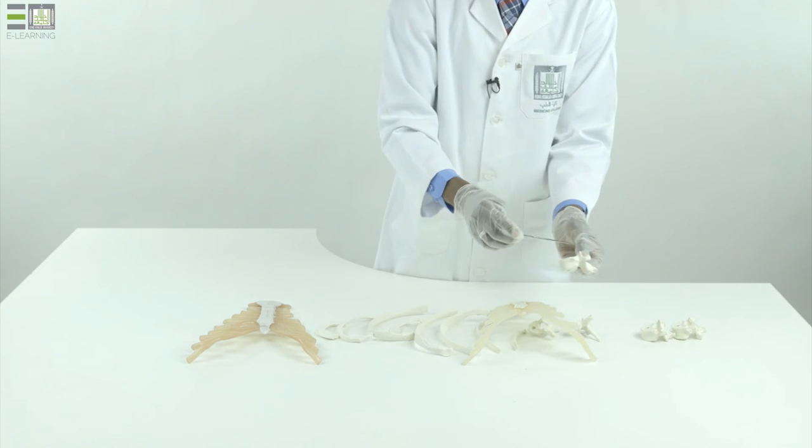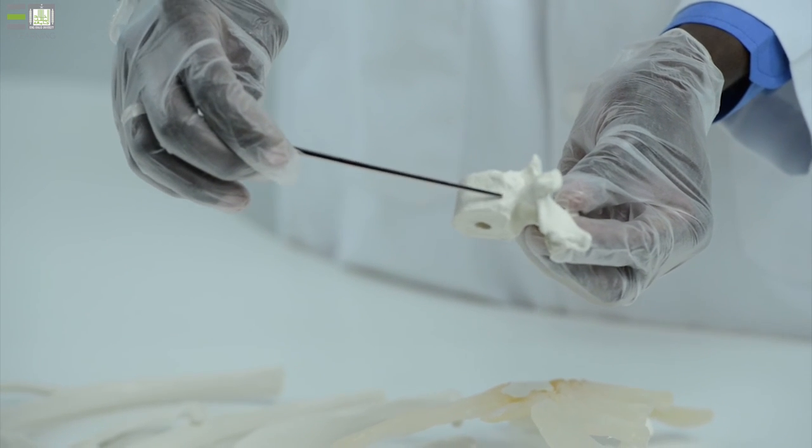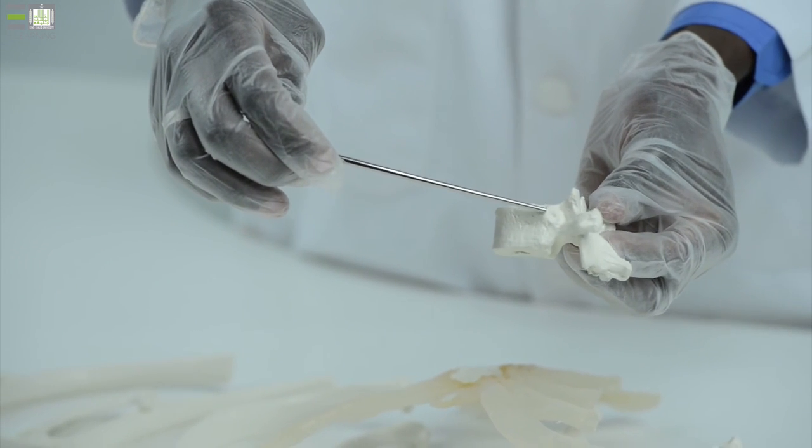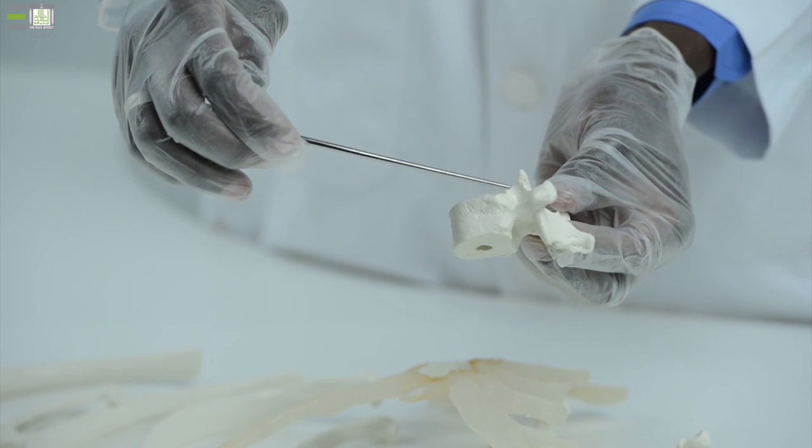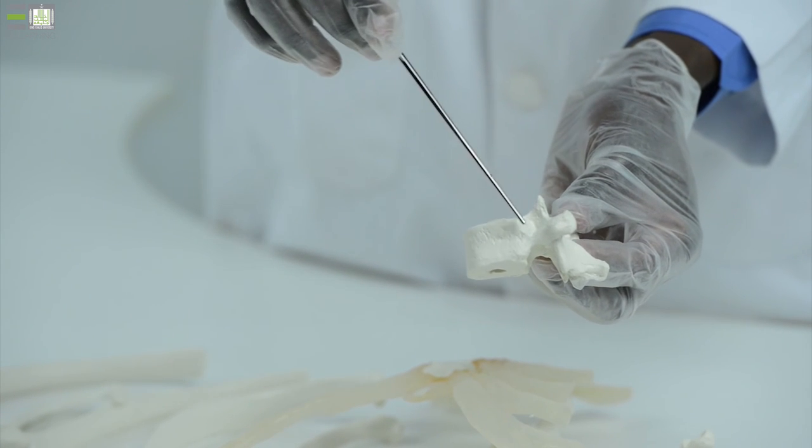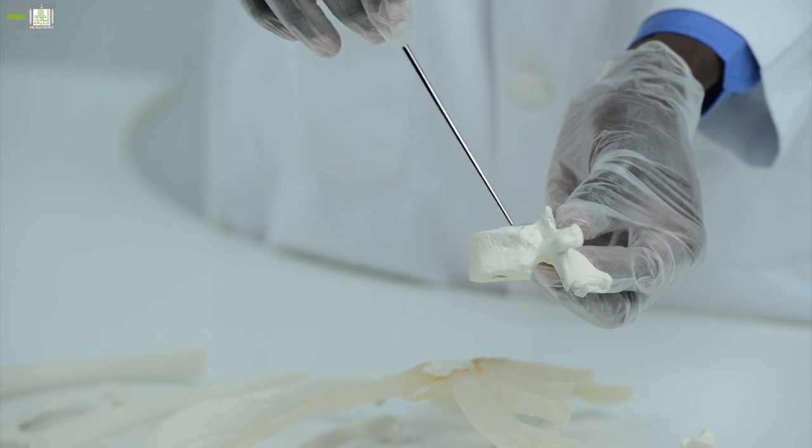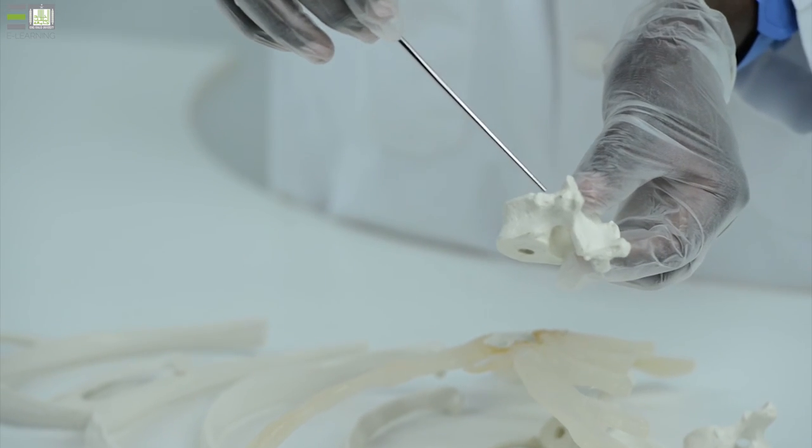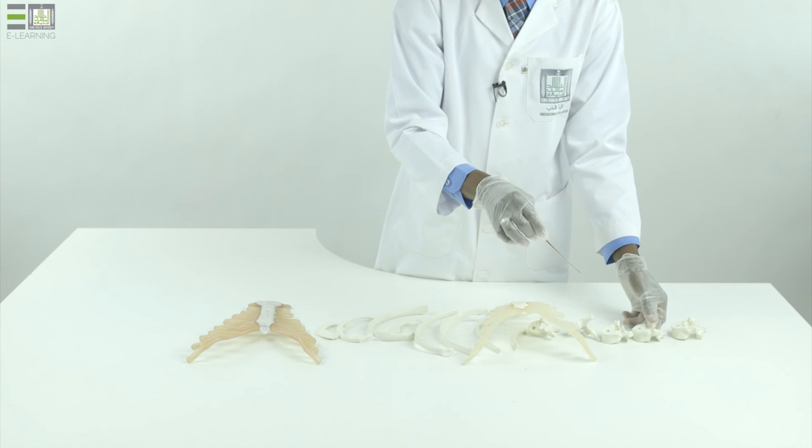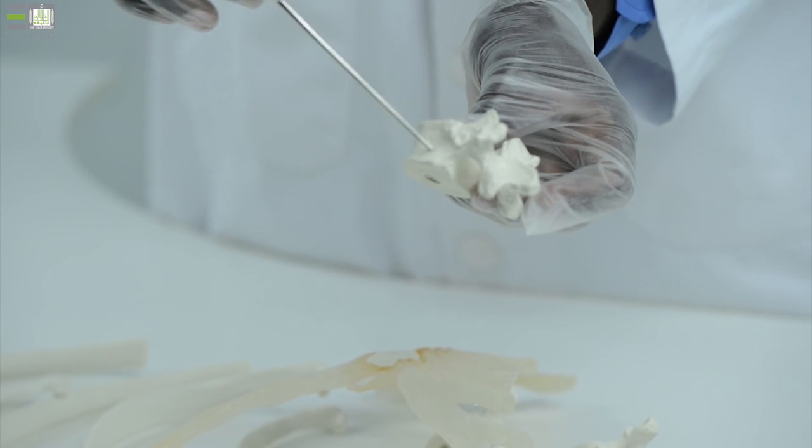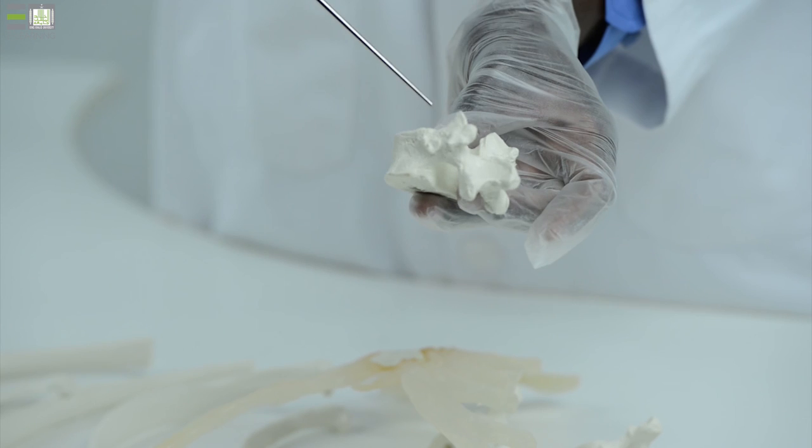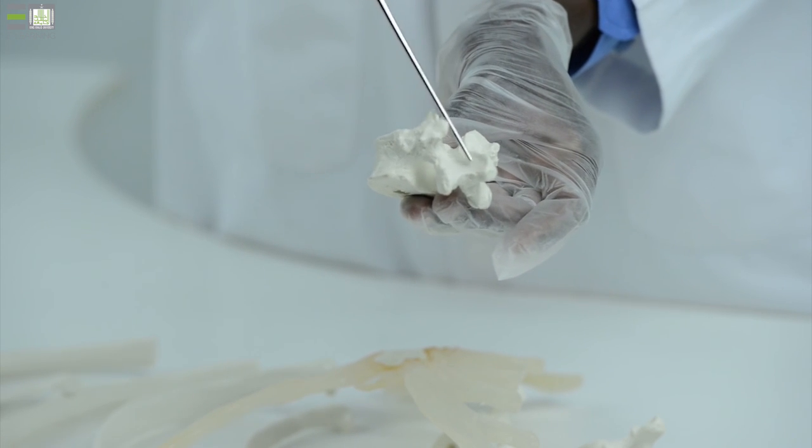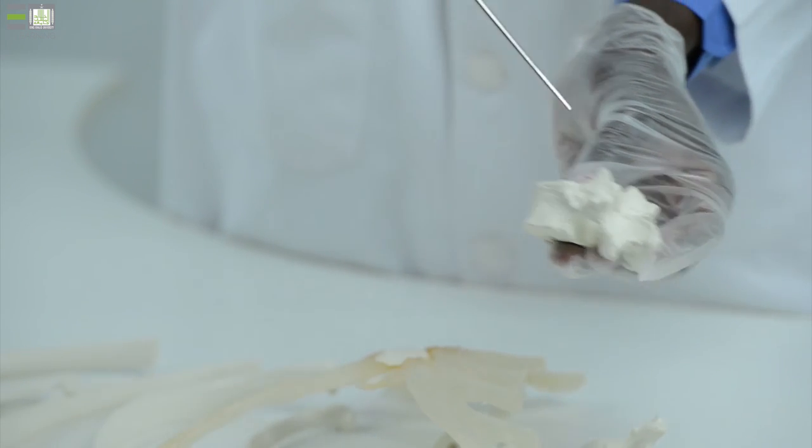In the lower part of our thoracic vertebral column, like the 10th thoracic vertebrae, considered as atypical due to presence of only one costal facet on the side of the body. The same within the 11th thoracic vertebrae, and lower down within the 12th, which lies in transitional area, and it has some similarities with the lumbar vertebrae.